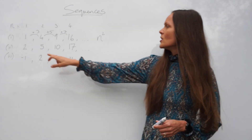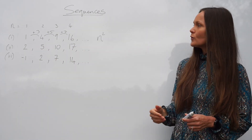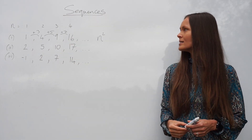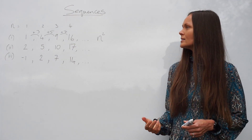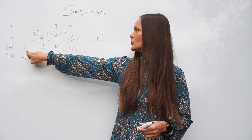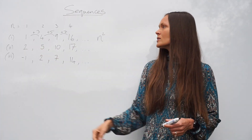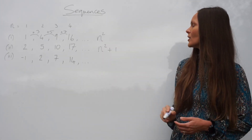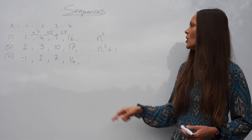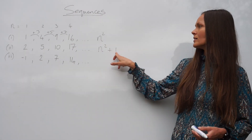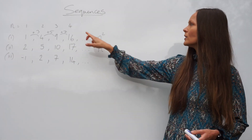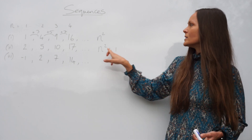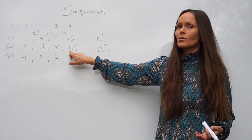Let's look at the second sequence: 2, 5, 10, 17. Comparing it to the first sequence — 1, 4, 9, 16 — each of these numbers is 1 more than the sequence above it. Add 1 to 1 and you get 2; add 1 to 4 and you get 5. So because it's 1 more each time, you take the nth term and add 1, giving n squared plus 1. Checking the fourth term: 4 squared is 16, plus 1 is 17 — correct.